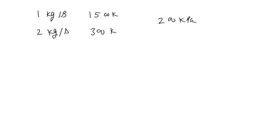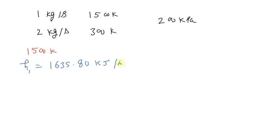Referring to the table of properties of air, properties corresponding to 1500 K can be written as: specific enthalpy H1 is equals to 1635.80 kJ per kg, and specific entropy S1 is equals to 8.61208 kJ per kg Kelvin.